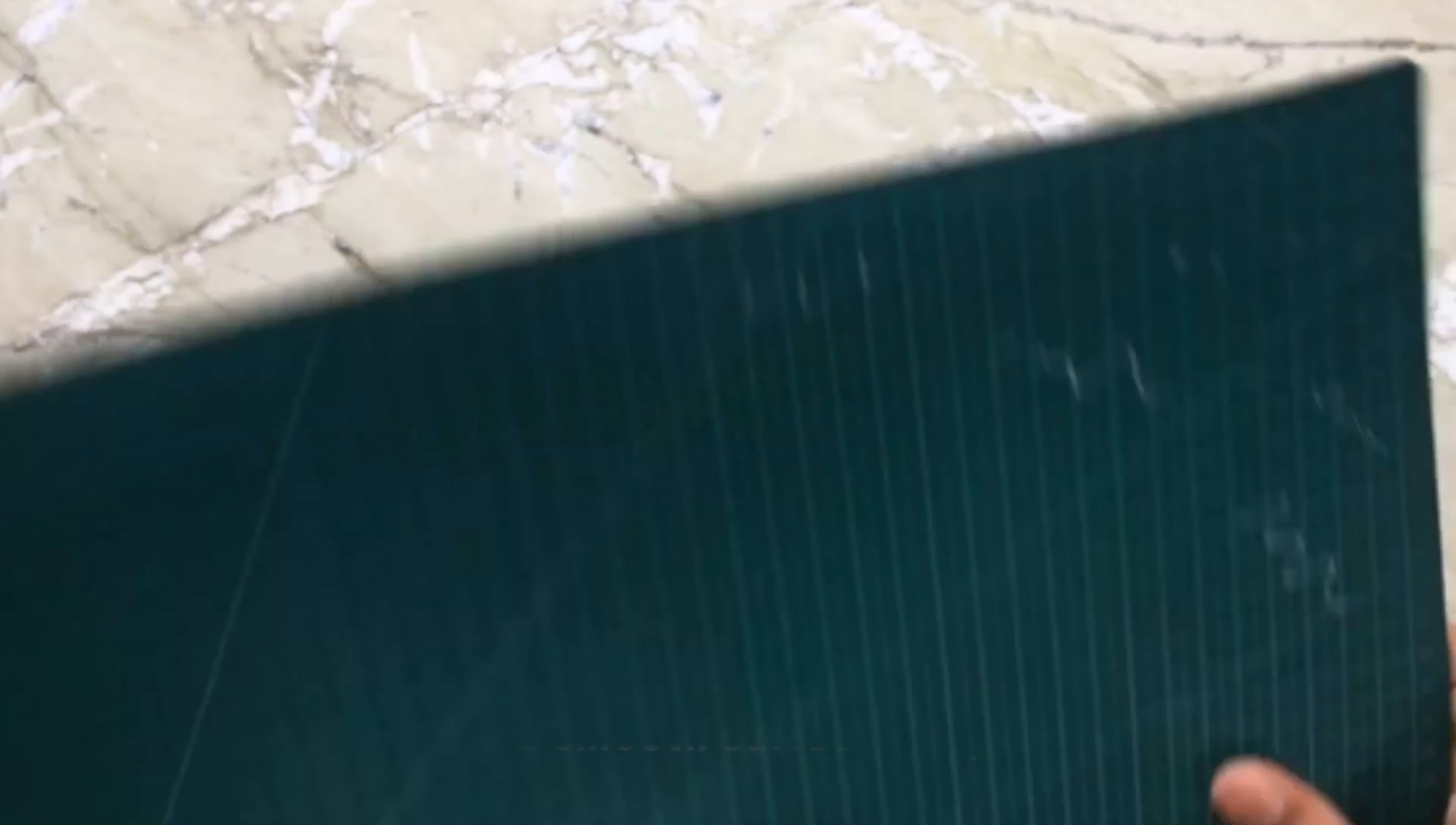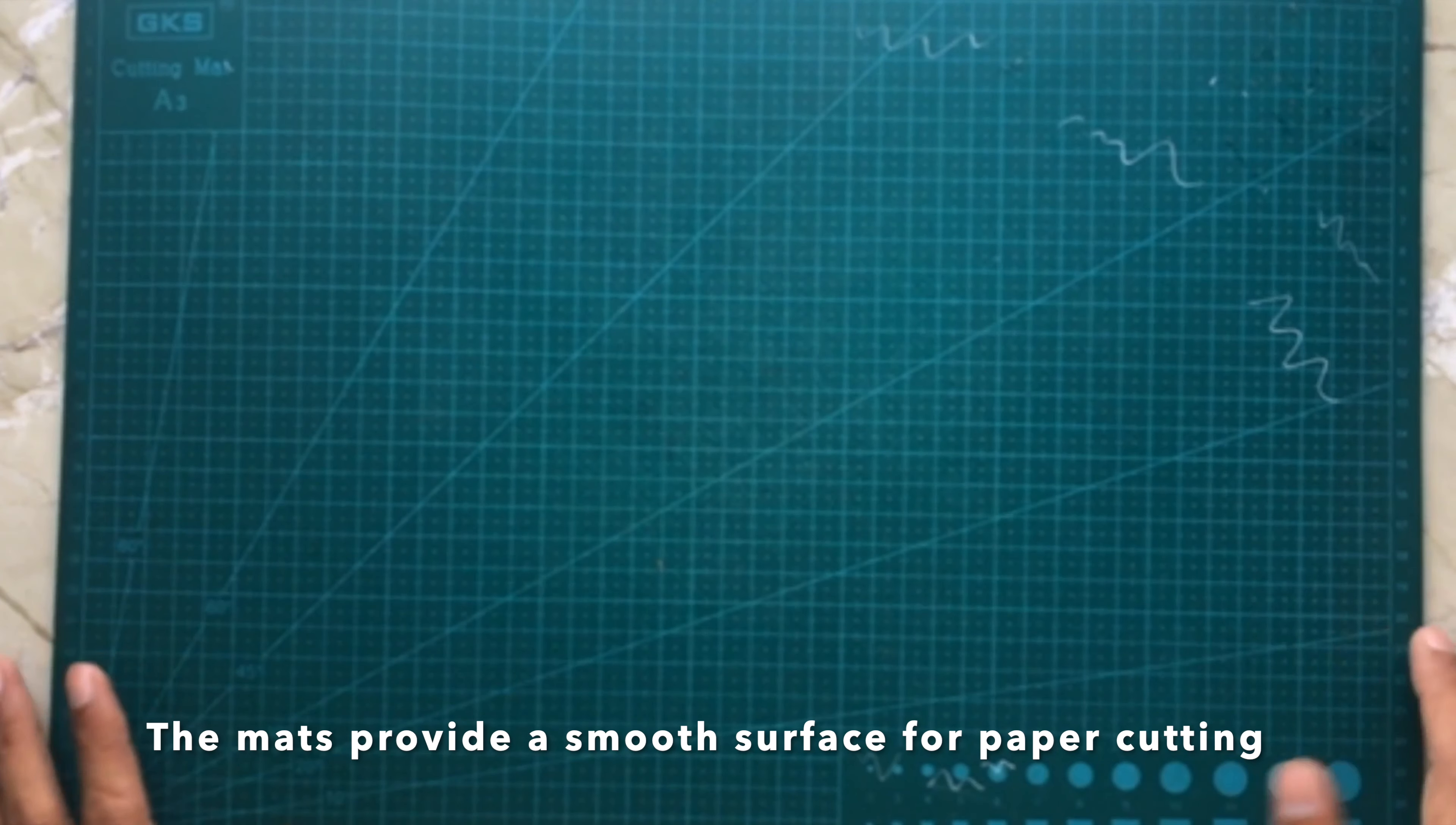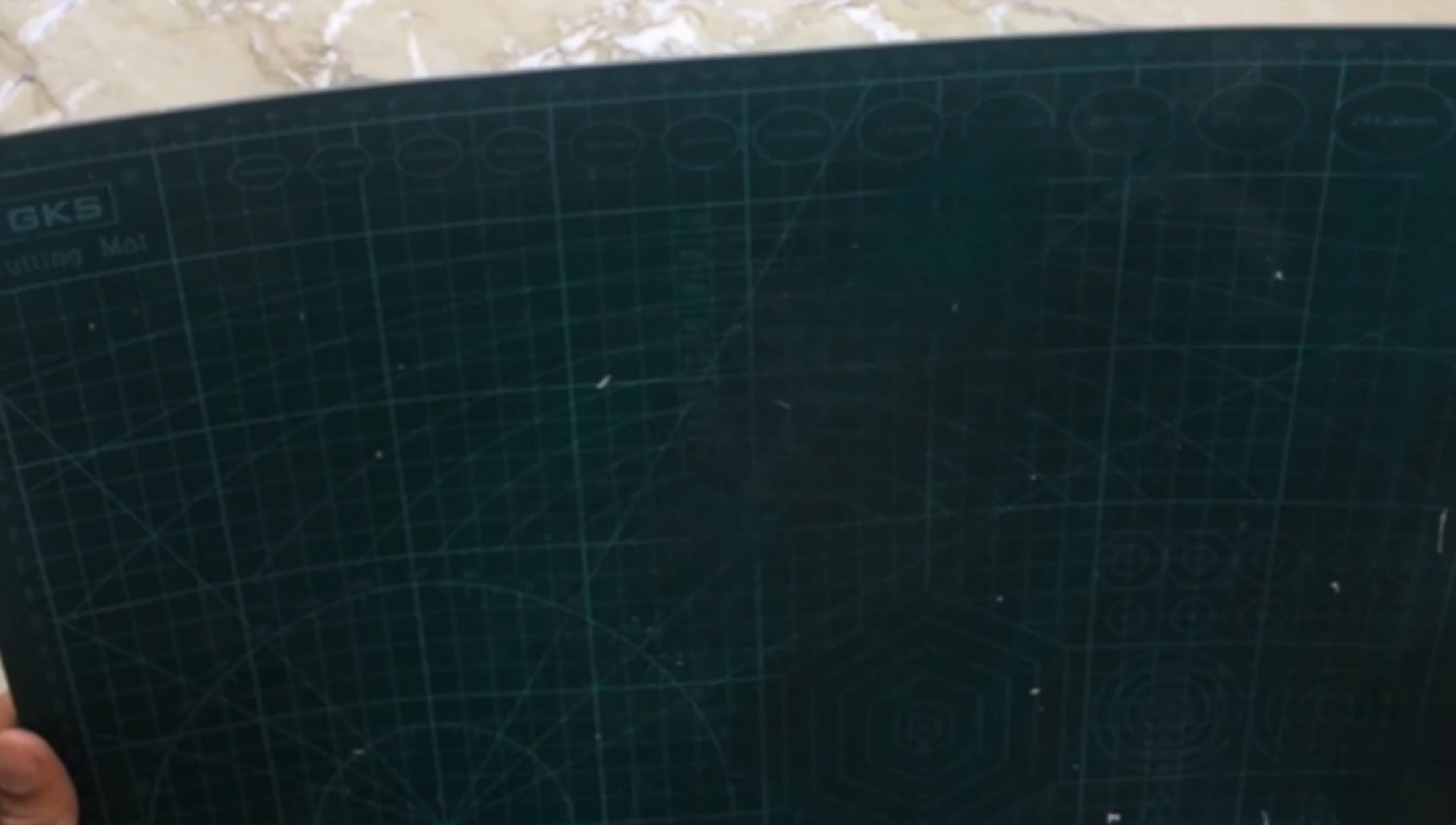The next cutting mat I have is the A3 size cutting mat. This is one of my most used cutting mats because I can easily cut A4 designs and A3 designs on this cutting mat. The only difference between the A3 and the A4 cutting mat is that of size. Both are made of the same PVC material and both are self-healing in nature.